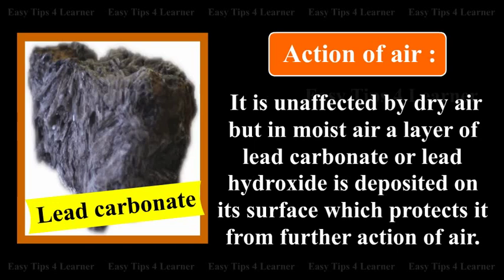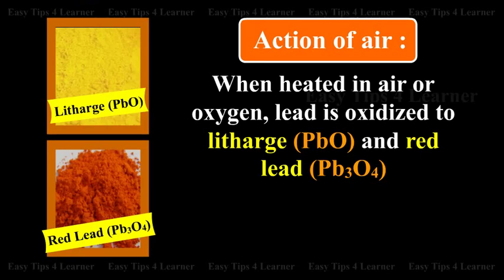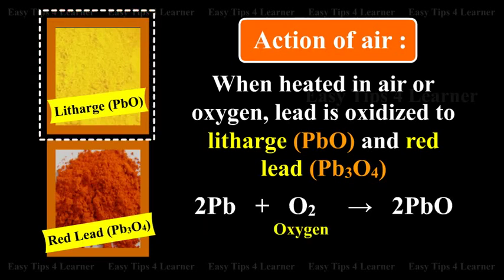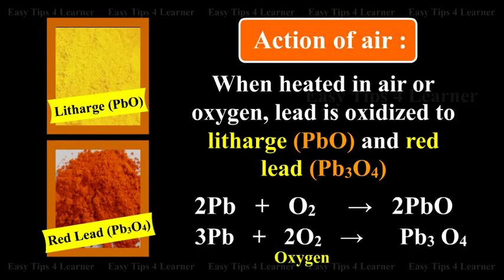Chemical properties of lead — action of air: Lead is unaffected by dry air, but in moist air a layer of lead carbonate or lead hydroxide is deposited on its surface, which protects it from further action of air. When heated in air or oxygen, lead is oxidized to litharge (PbO) and red lead (Pb3O4). Lead plus oxygen gives lead monoxide; lead plus oxygen gives red lead.